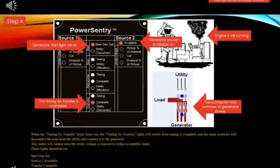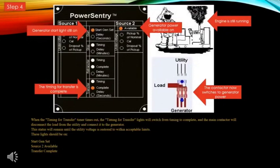Step four: when the timing-for-transfer timer times out, the timing for transfer light will switch from timing to complete, and the main contactor will disconnect the load from the now-dead utility and connect it to the generator. This status will remain until the utility voltage is restored to within acceptable limits. The generator start light is still on, generator power available light is still on, and smoke is still coming from the engine. The timing for transfer is now complete, and the contactor has switched from the utility over to the generator power.